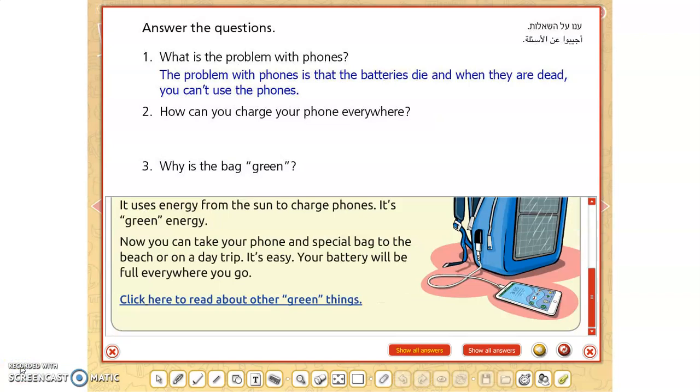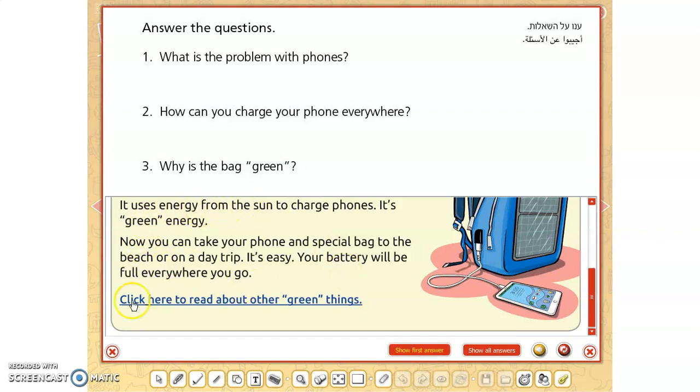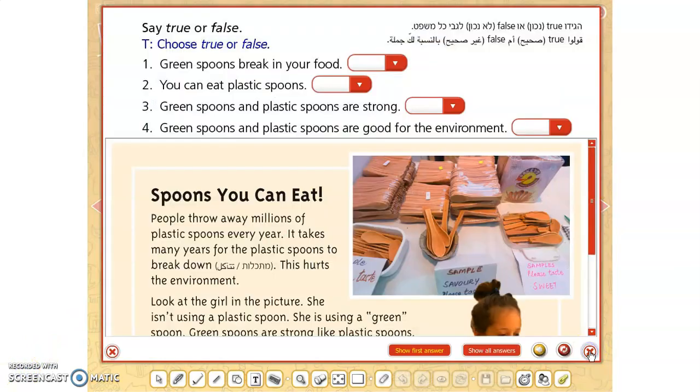After you stopped and answered the questions, let's see if you were correct. What is the problem with phones? The problem is that the batteries die when they are dead. You cannot use the phones. How can you charge it? You can charge your phone everywhere by putting it in a special bag that uses the sun to charge it. Why is the bag green? Because it uses the energy from the sun to charge phones.